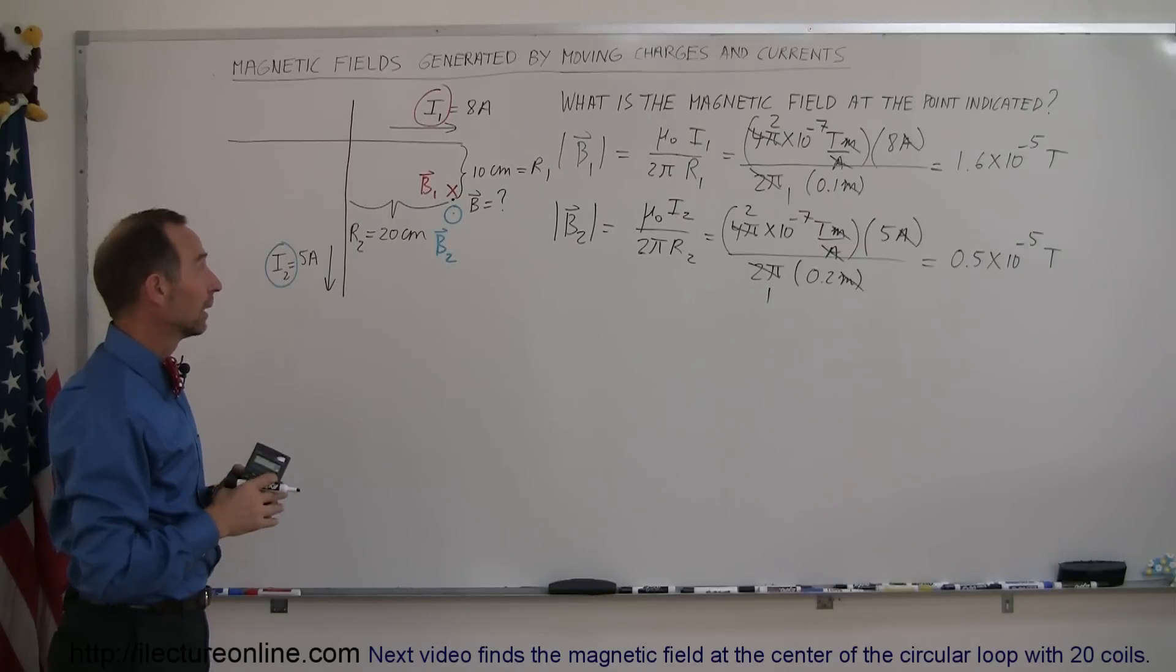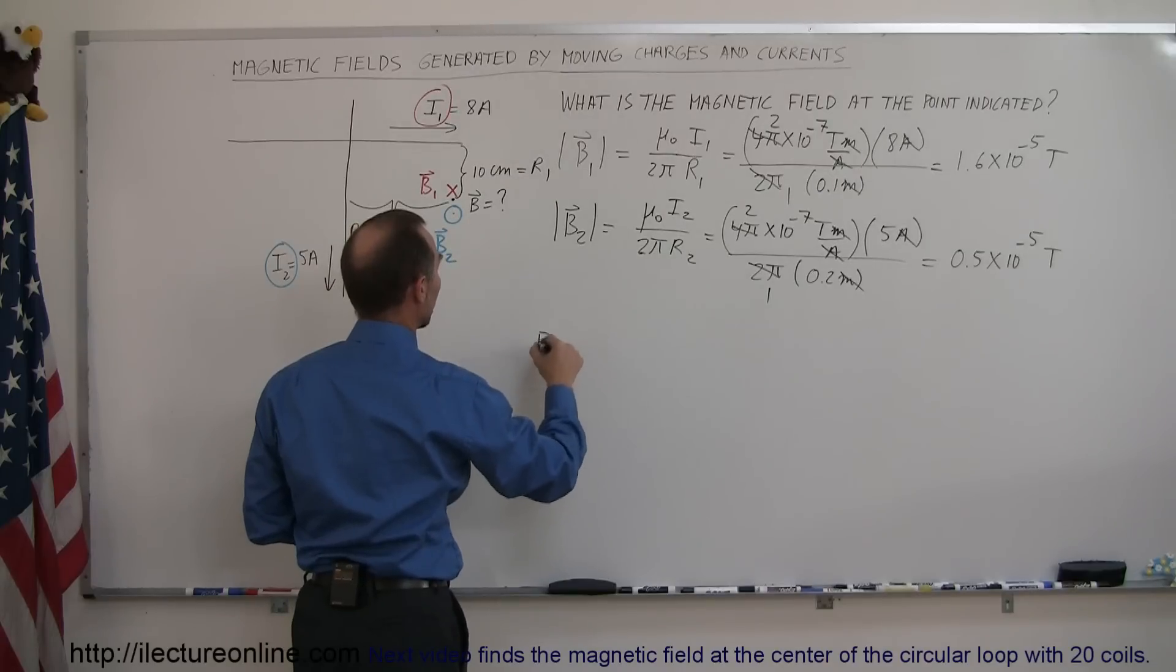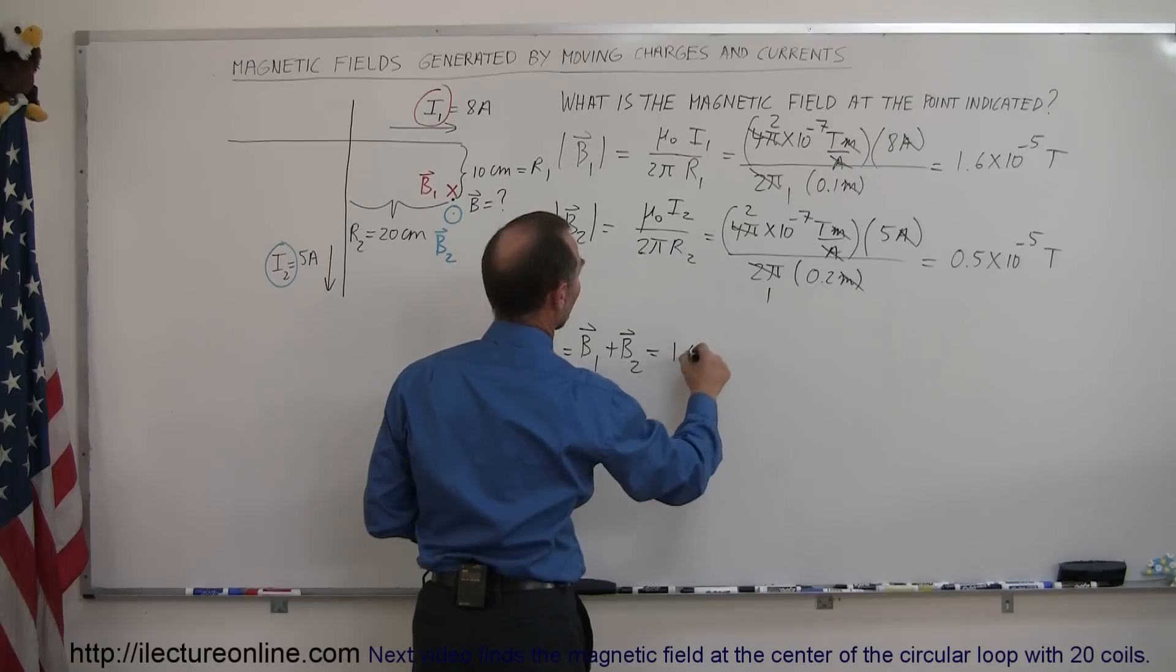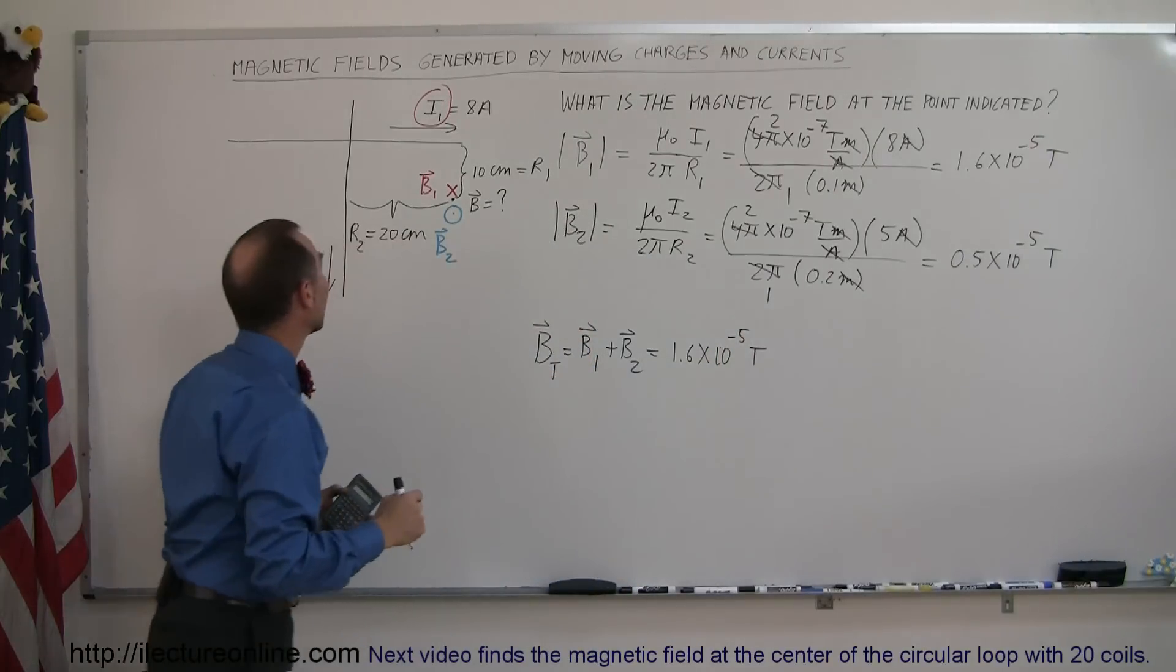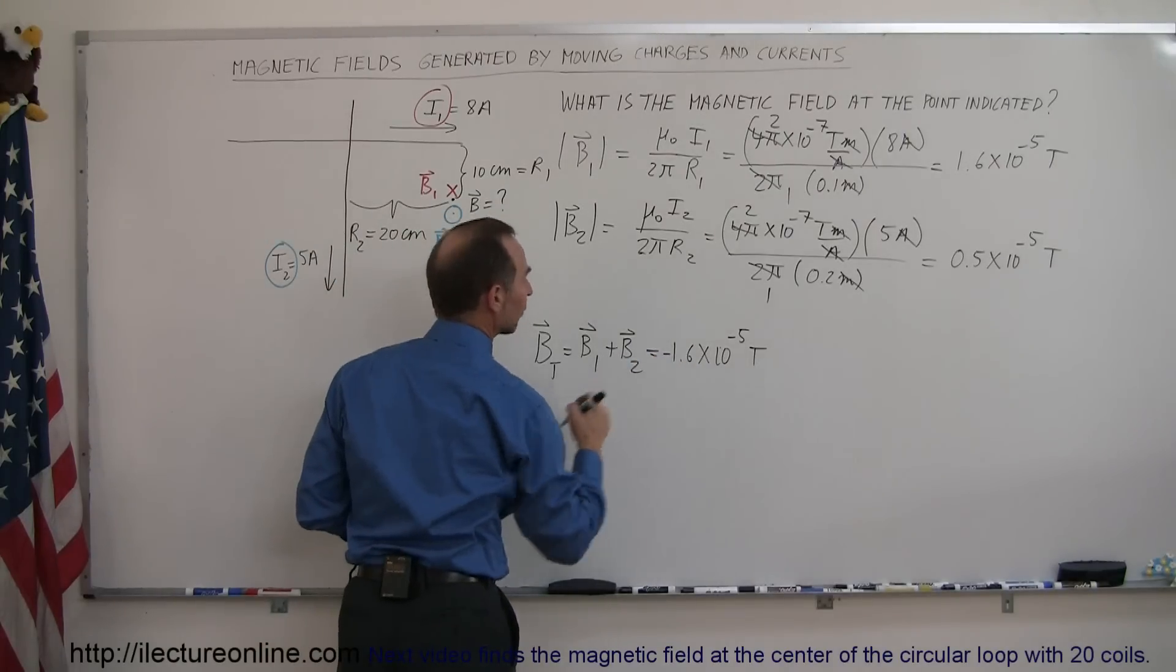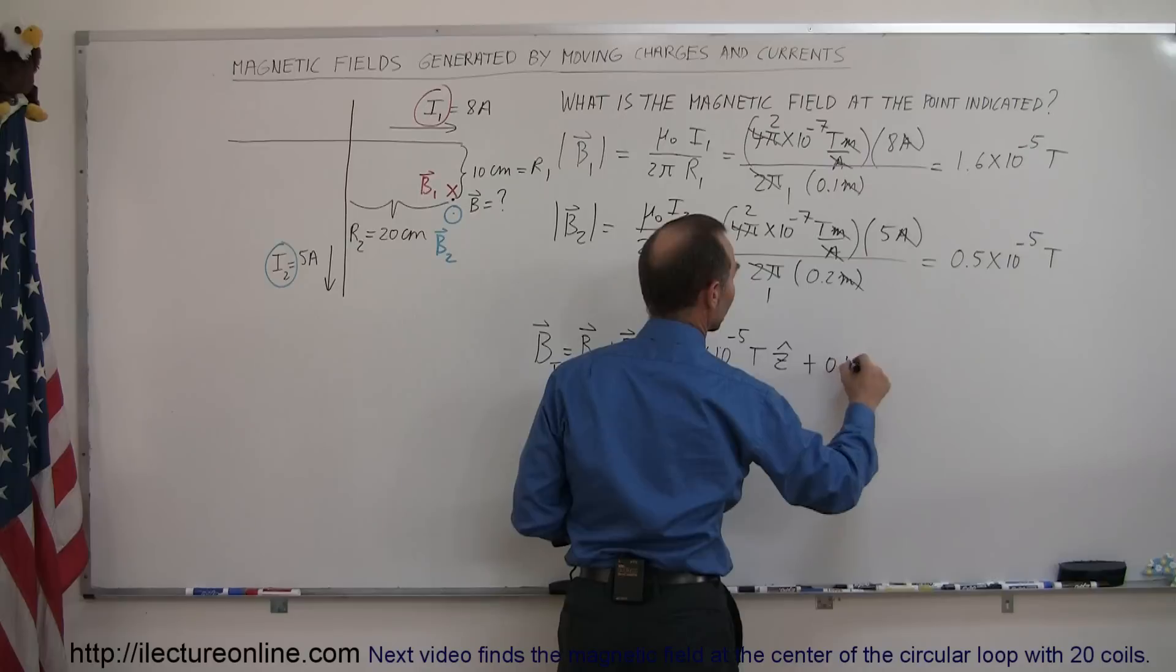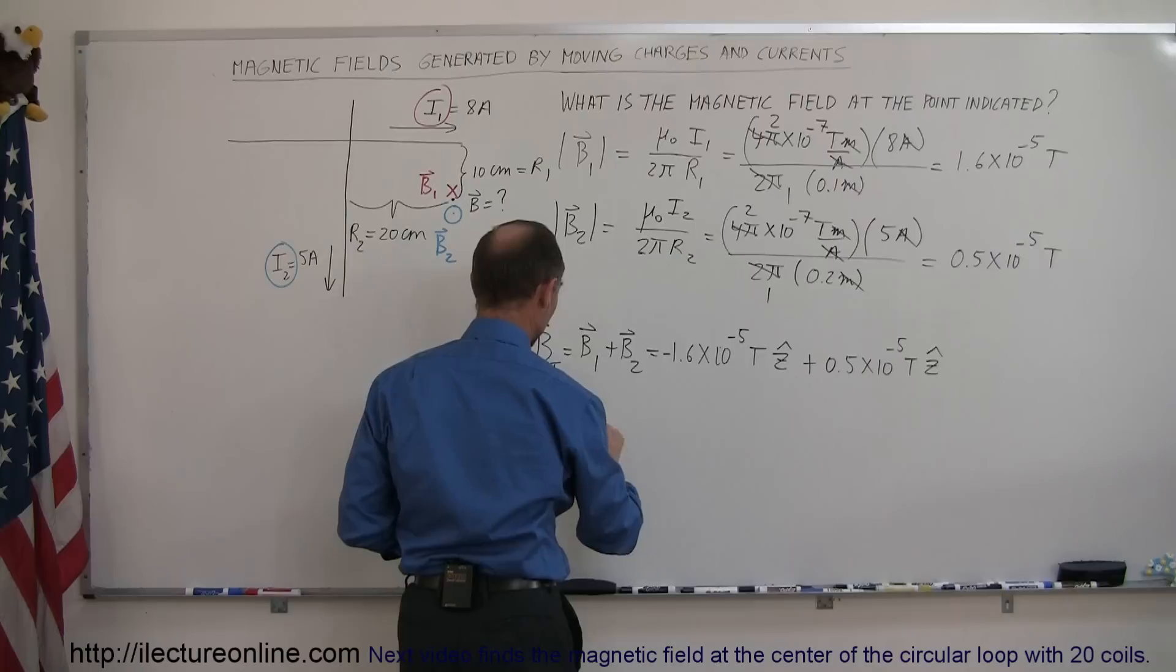All right, now we want to add them together. Let's say that into the board is negative, out of the board is positive, so the sum of the two, B total is simply B1 plus B2, and B1 has a value of 1.6 times 10 to the minus 5 teslas. Now, B1 is into the board, so that's going to be a negative value, and that will be in the negative Z direction. B2 comes out of the board, that's going to be a positive value, so it's plus 0.5 times 10 to the minus 5 teslas in the positive Z direction, so we sum them together.